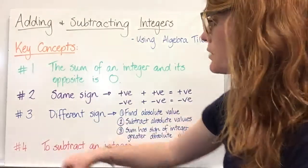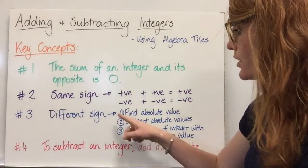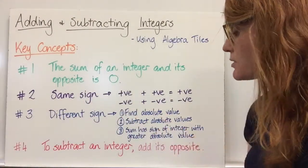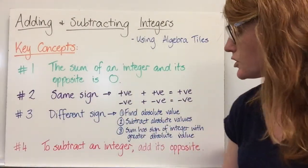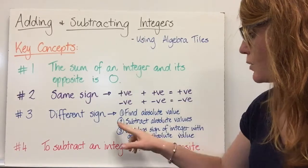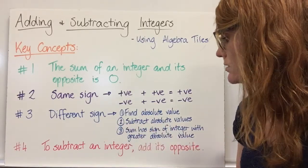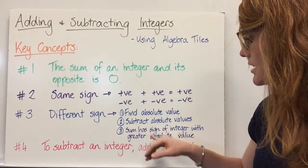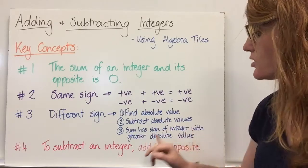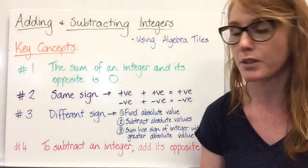Number three: when we're adding different signs, we first find the absolute value of each integer. We subtract the absolute values, and then the sum has the sign of the integer with the greater absolute value.